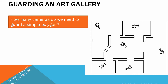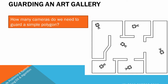Assume that a camera is placed in a particular corner. What points can it observe? It can observe a mathematical set of points P such that a line segment connecting the camera's position to any point in that set does not leave the polygon. For example, if you consider a point here and connect a line segment, that line segment leaves the art gallery at a particular hole — meaning that point is not visible from this camera.